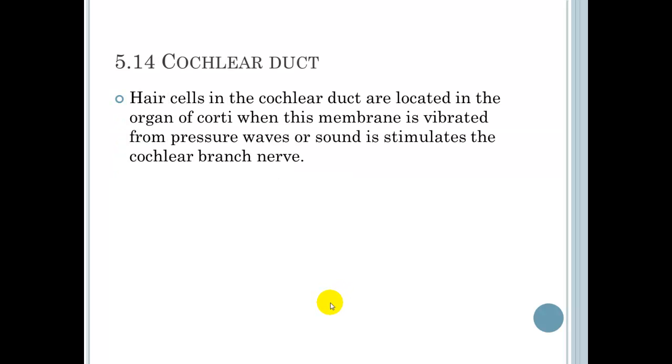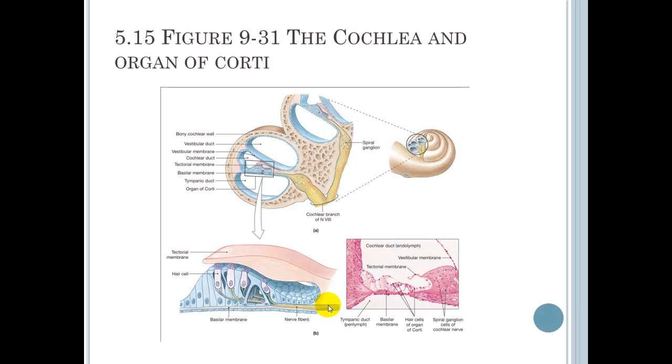5.14, cochlear duct. Hair cells in the cochlear duct are located in the organ of Corti. When this membrane is vibrated from pressure waves or sound is stimulated, sound stimulates the cochlear branch nerve.